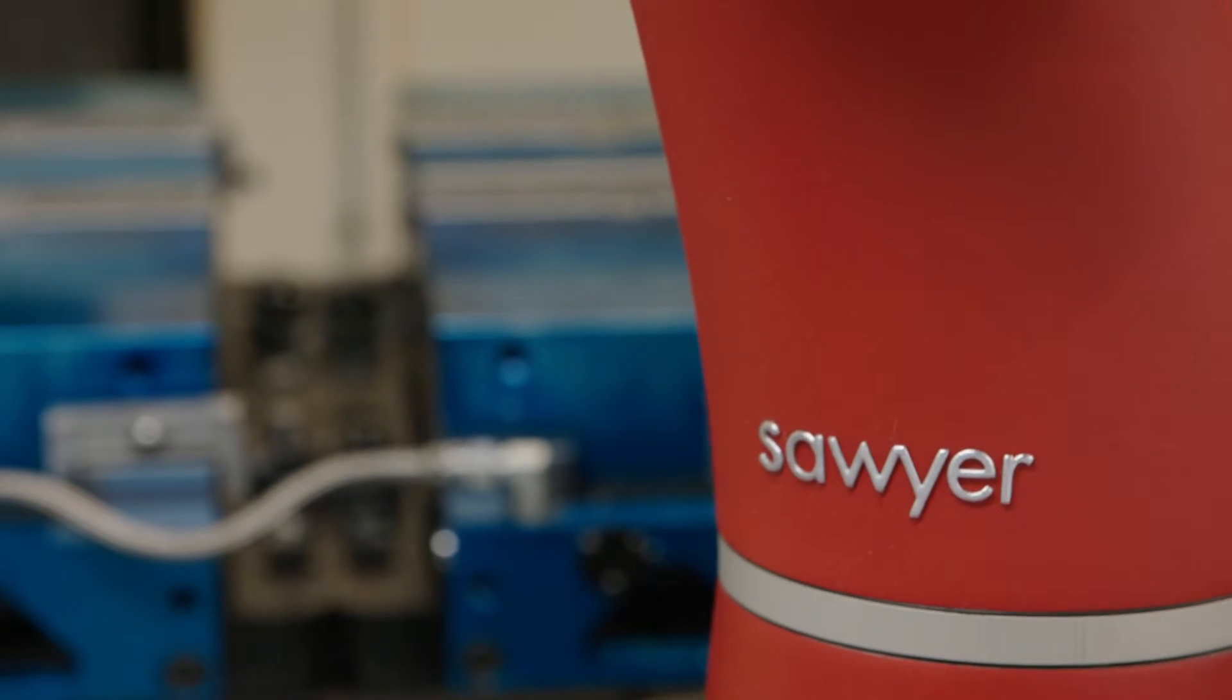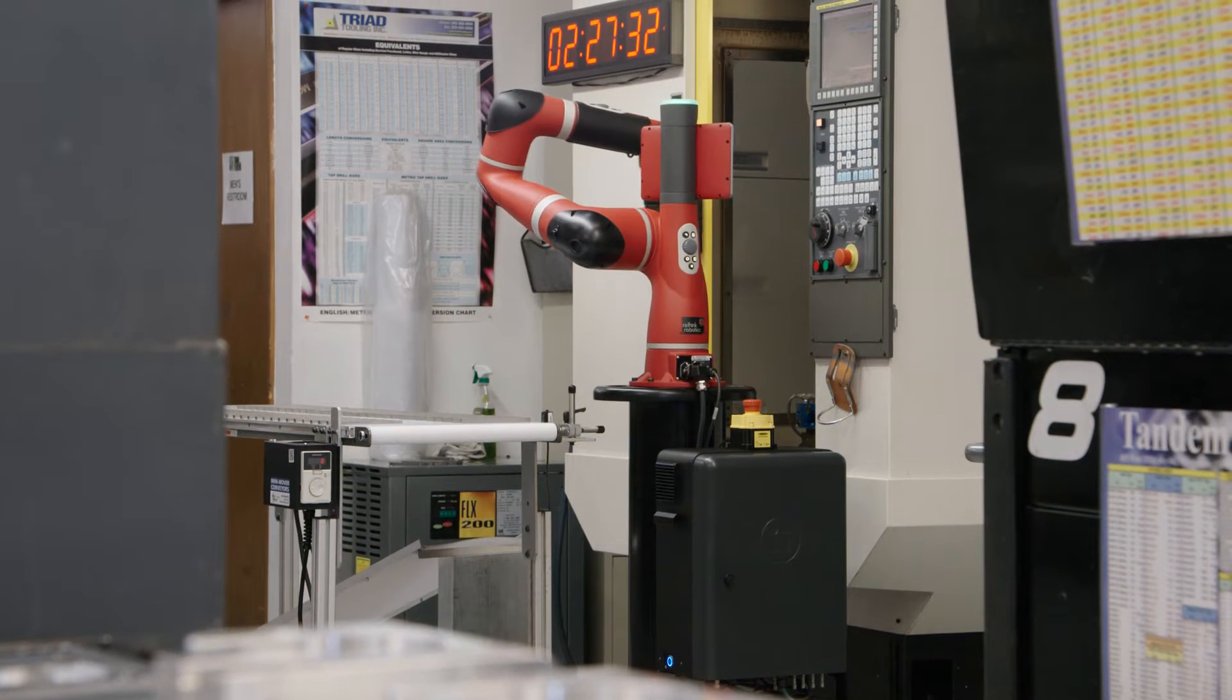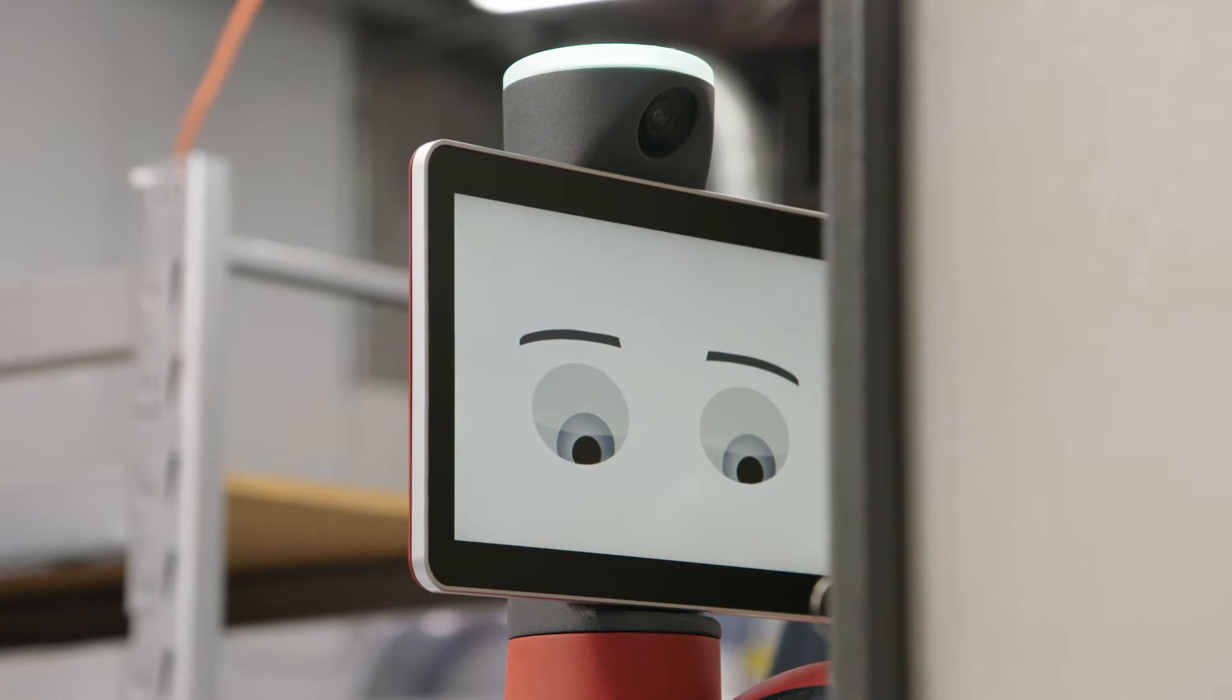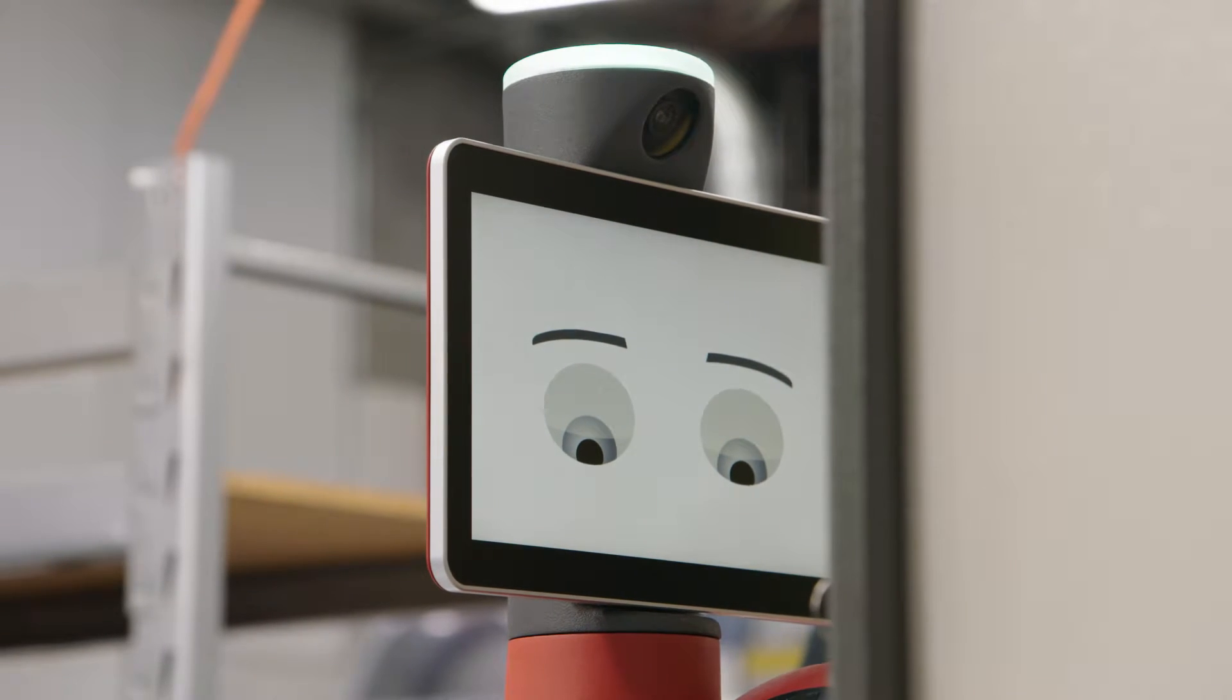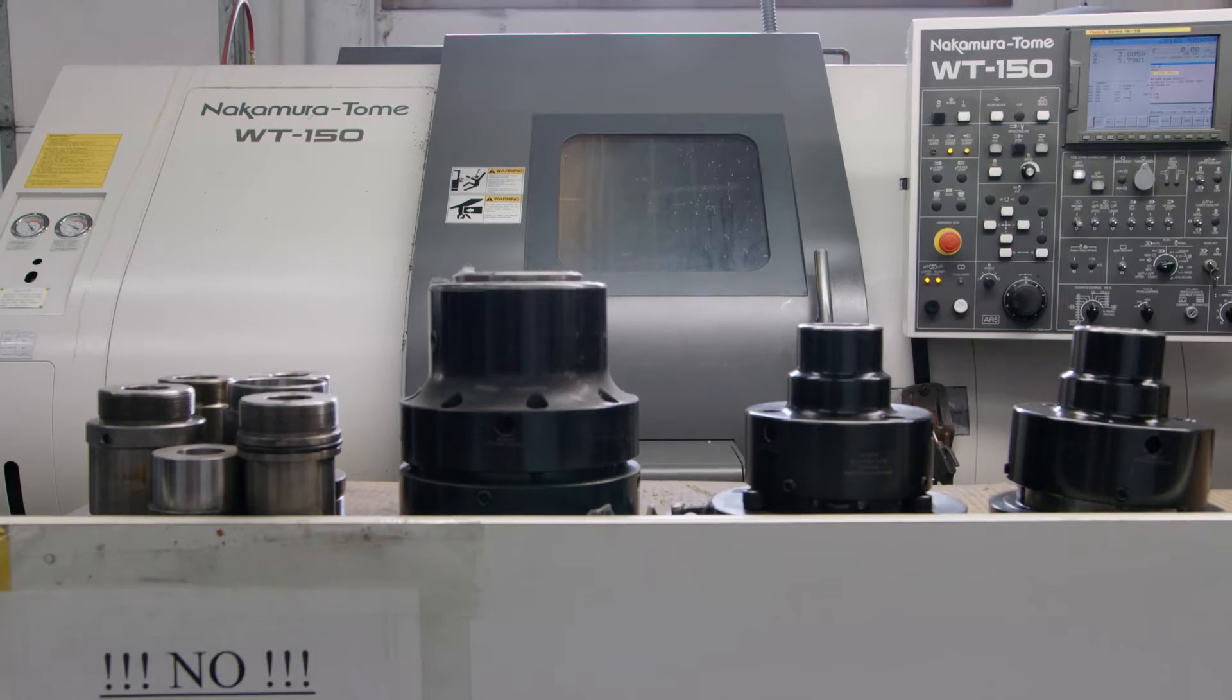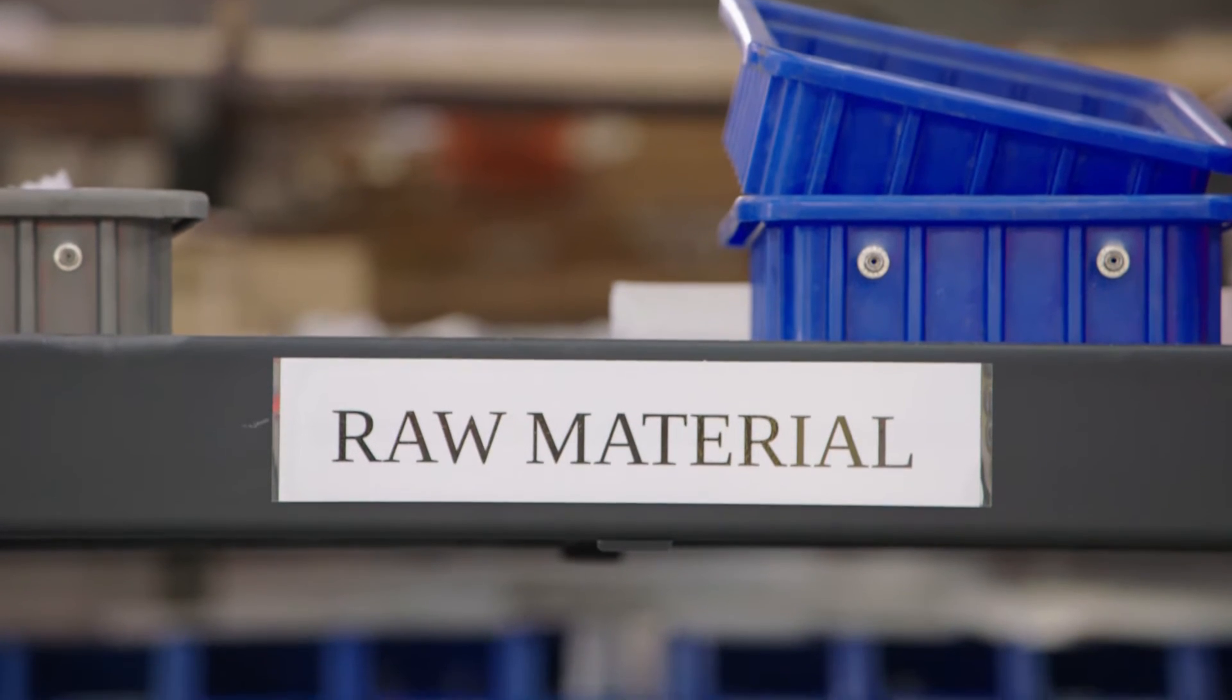One of the main reasons why we invested in the Sawyer robot was because the orders that we were receiving and the ship dates that we had to meet were such a close tolerance that we did not have the resources or the capability to produce that volume in that short of time.